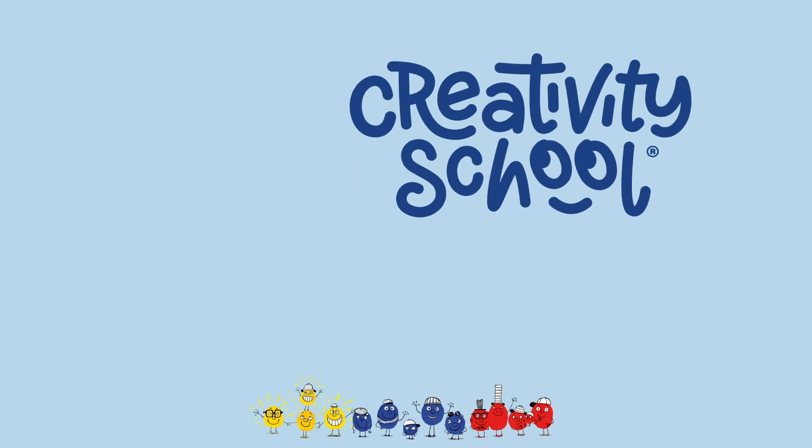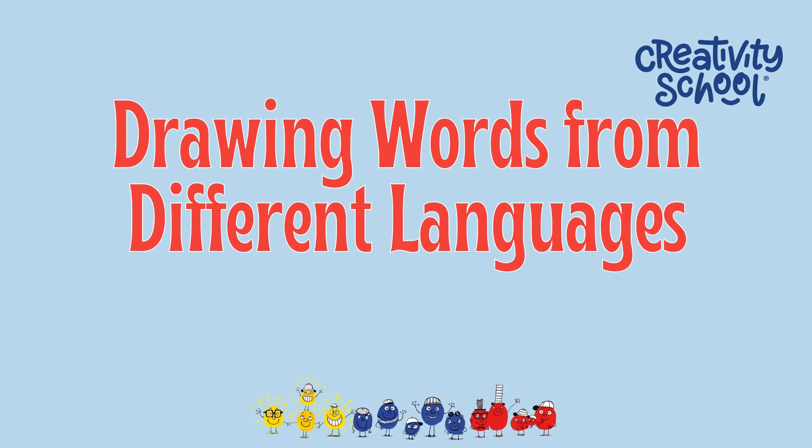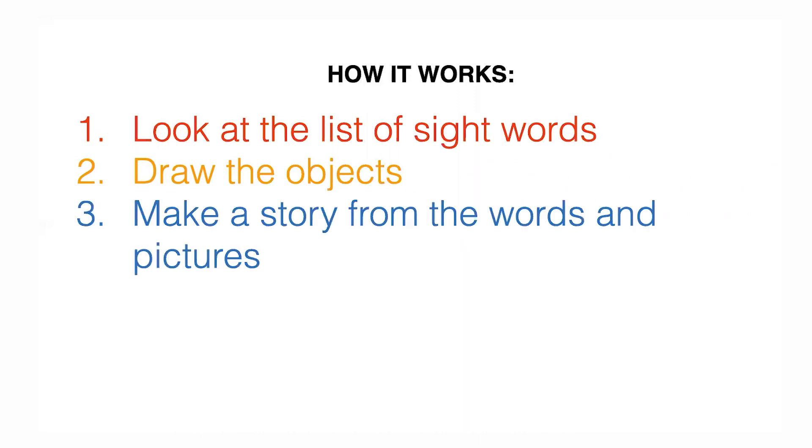So I'm going to change it up a little bit today. We're going to have an international flavor of sight words and draw pictures. We're going to have some words that are in different languages, but they're all going to be in English as well. So you're going to learn two words instead of just one. We're going to list the words, draw the objects, and make a story from the words and pictures.